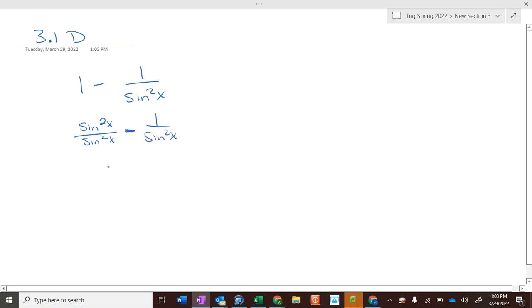Okay, so we get sine squared of x minus 1 over sine squared of x. Sine squared of x - Pythagorean identity that's very similar to that is what?